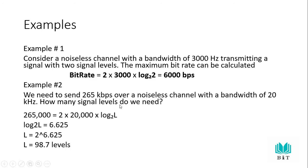To find L, we rearrange the formula. Dividing 265,000 by (2 × 20,000) gives 6.625. So log₂(L) = 6.625, which means L = 2^6.625, giving approximately 98.7 levels. This is example number 2.